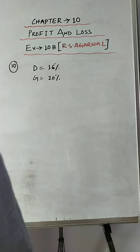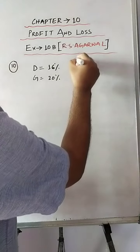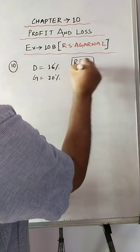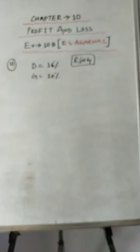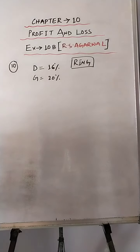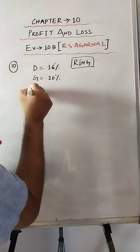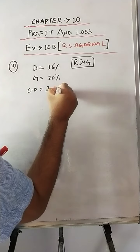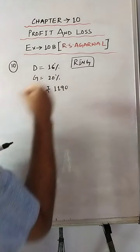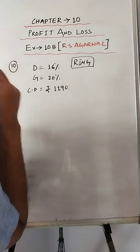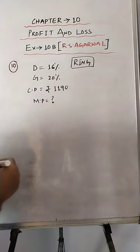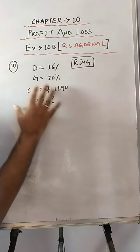Find the mark price of the ring. The item is a ring. What is the mark price of the ring which costs the jeweller 1190? That is the cost price is 1190 — the price at which the jeweller bought the ring. So what we have to find out is the mark price. These are all the complete data given in the question.